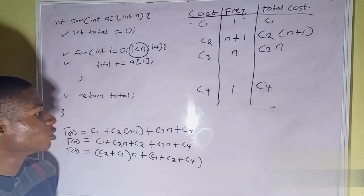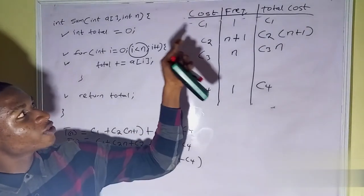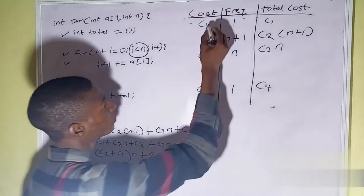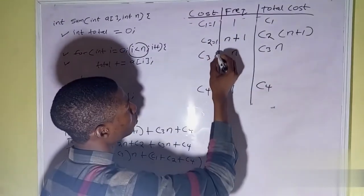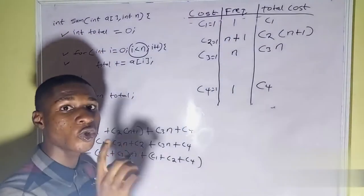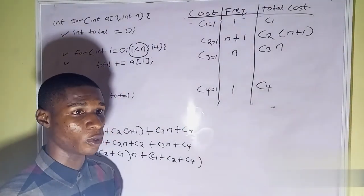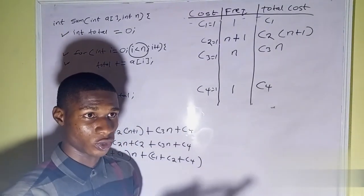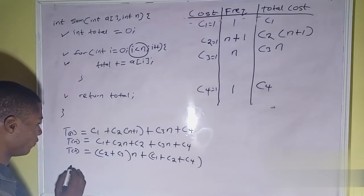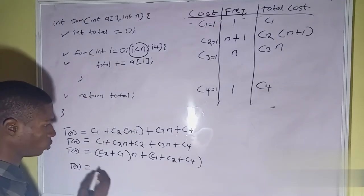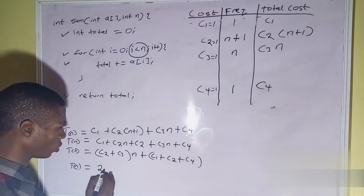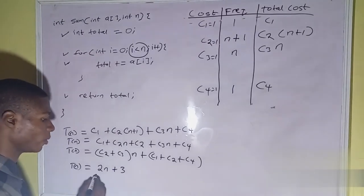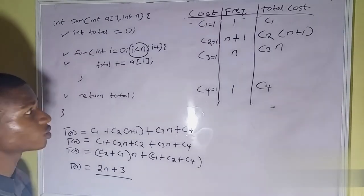If C1, C2, C3, and C4 each equal 1 — meaning 1 unit of time, which can vary from machine to machine — then T(n) equals 2n plus 3. This is the time complexity for this algorithm.